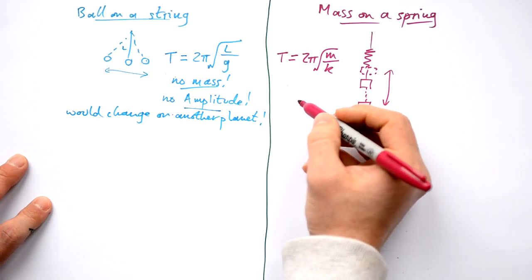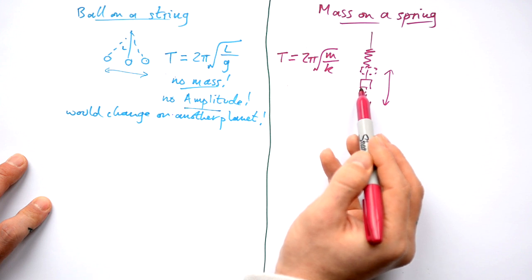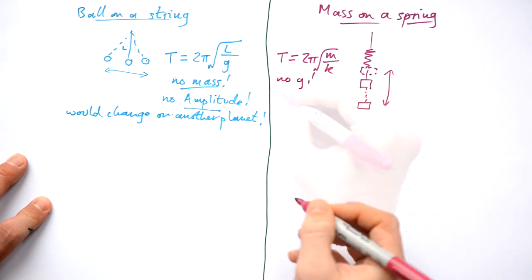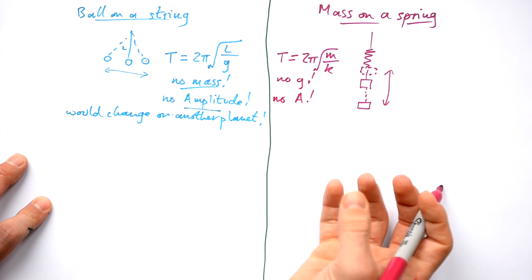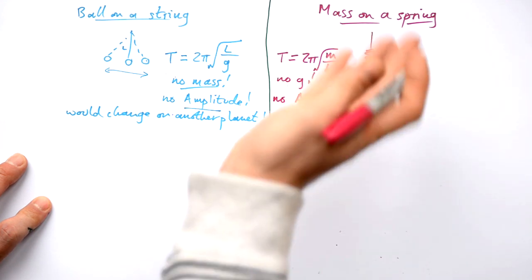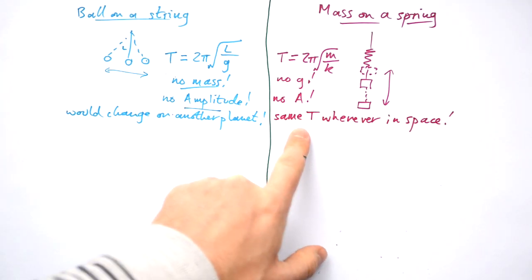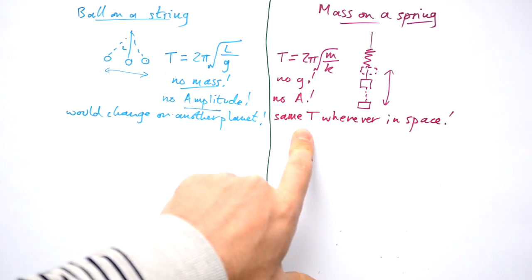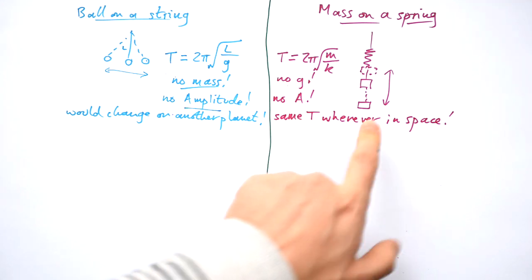So what about the mass on a spring? We do have mass in this case. So the time period does depend on what mass you put in there, but it doesn't have g. And again, it has no amplitude. So it doesn't matter how far you pull down this mass from equilibrium, it's still going to oscillate up and down with the same time period and the same frequency. So it doesn't matter what the gravitational field strength is. You could be in space where there's a g of zero. You're still going to have the same time period for a mass spring system.